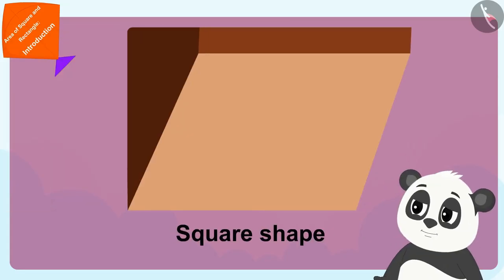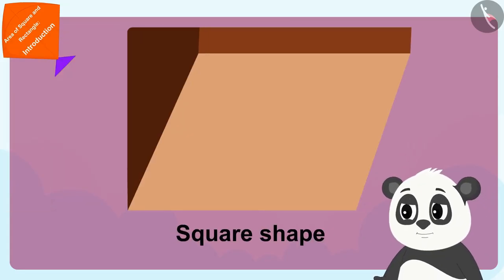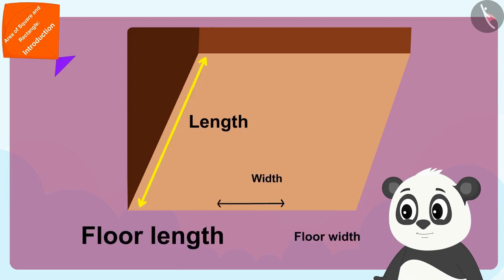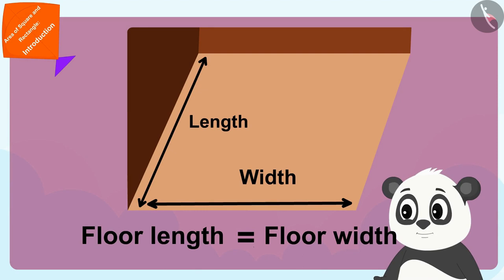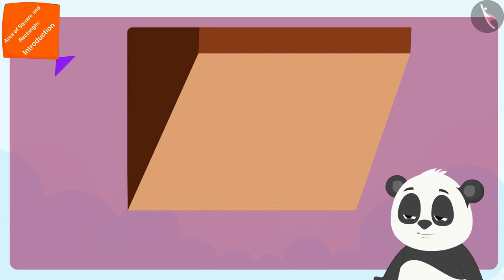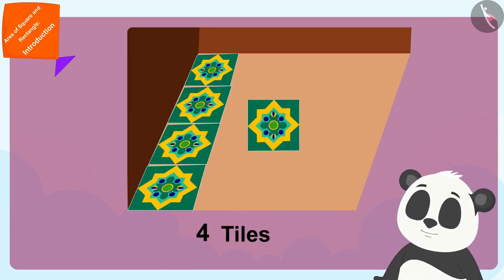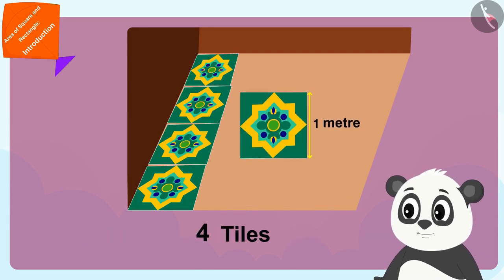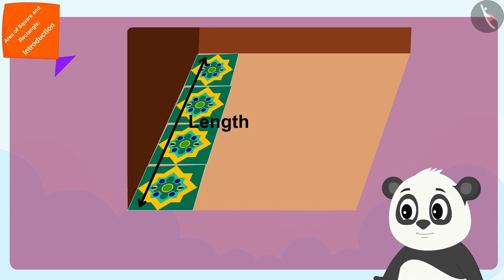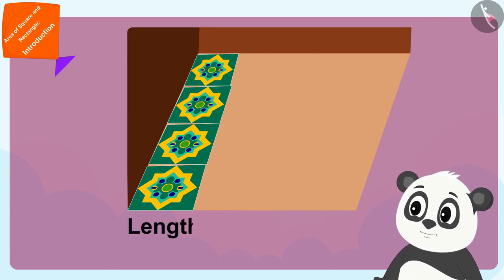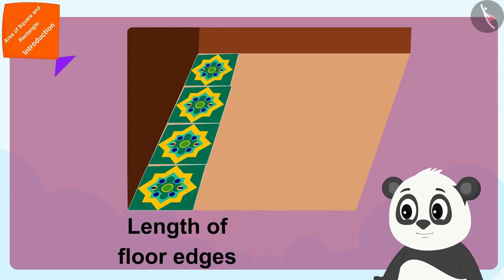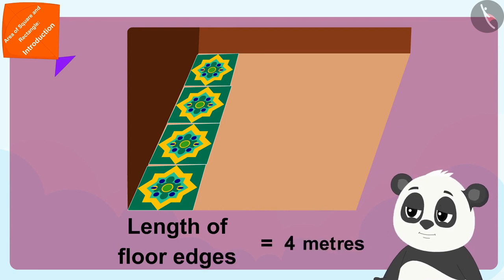He has laid four one meter long tiles along the edge of his floor. This means the edge of his square shaped floor is four meters long.